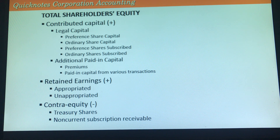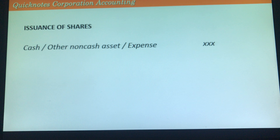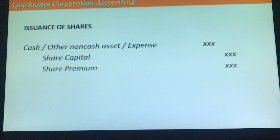Let's start with issuance of shares. The entry is: debit cash or other non-cash asset or expense — basically when issuing shares we either issue them for cash, or purchase equipment, land, or furniture, or pay expenses like legal fees — and then credit share capital and credit share premium. When we debit cash, always remember to multiply the number of issued shares by the issue price. In the Philippines, the issue price may be equal to par or higher than par, but it is not allowed to issue shares lower than par value.